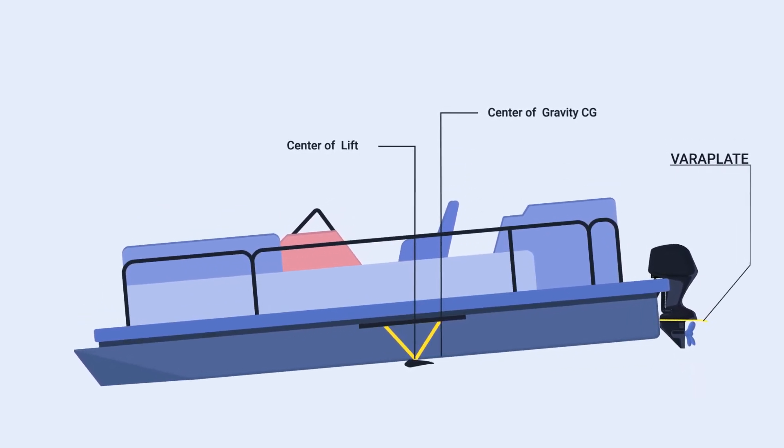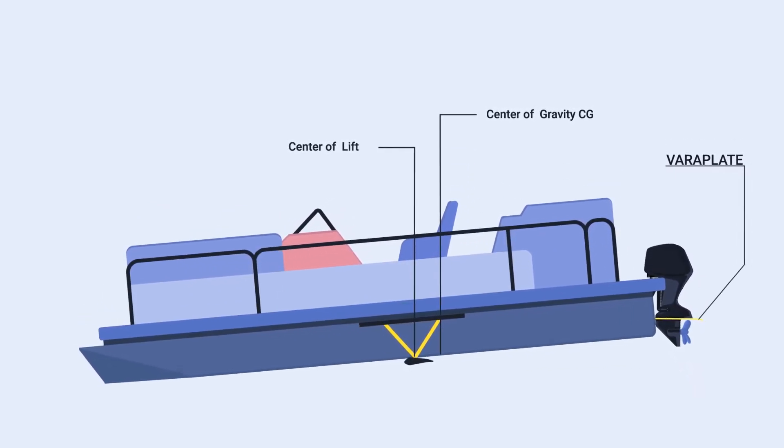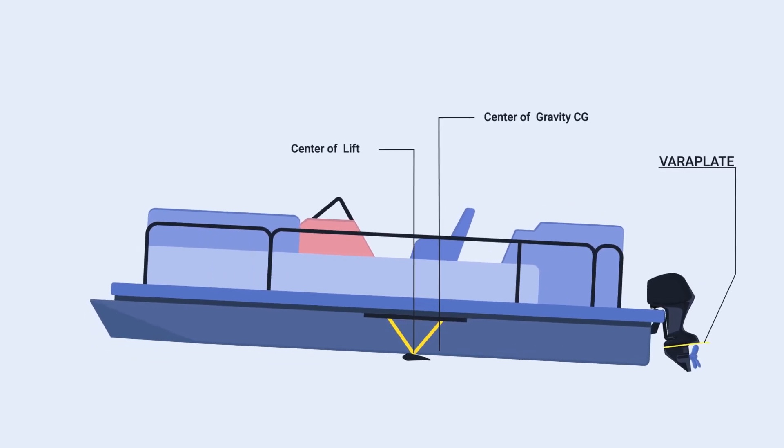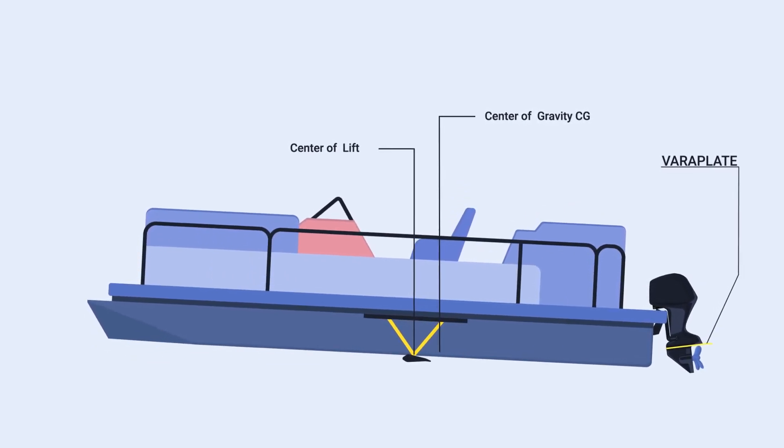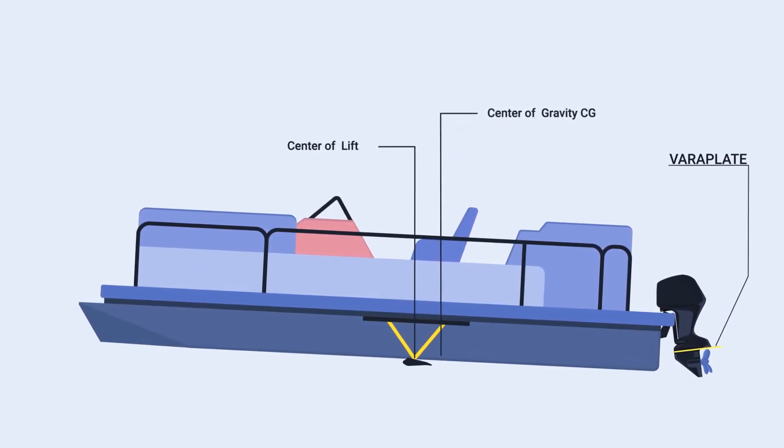If the outboard motor is trimmed down, the variplate pushes the bow down. If the outboard motor is trimmed up and still producing maximum thrust, the variplate pushes the bow up.